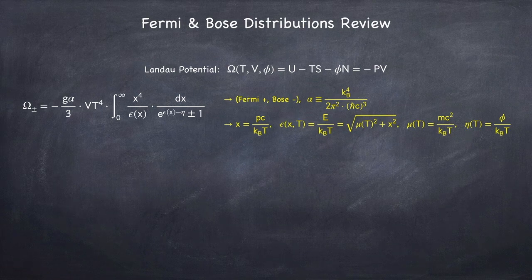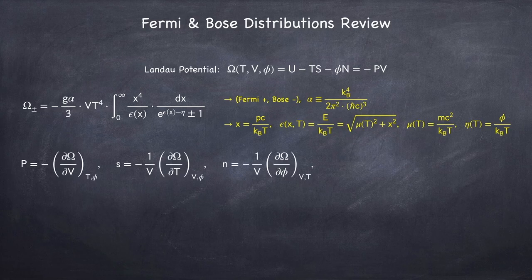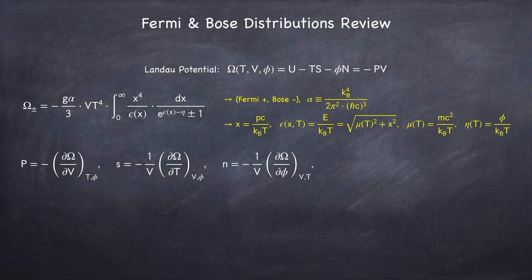From this potential we can get the following quantities. We can get the pressure, which is the negative derivative of the potential with respect to the volume, holding temperature and chemical potential constant.